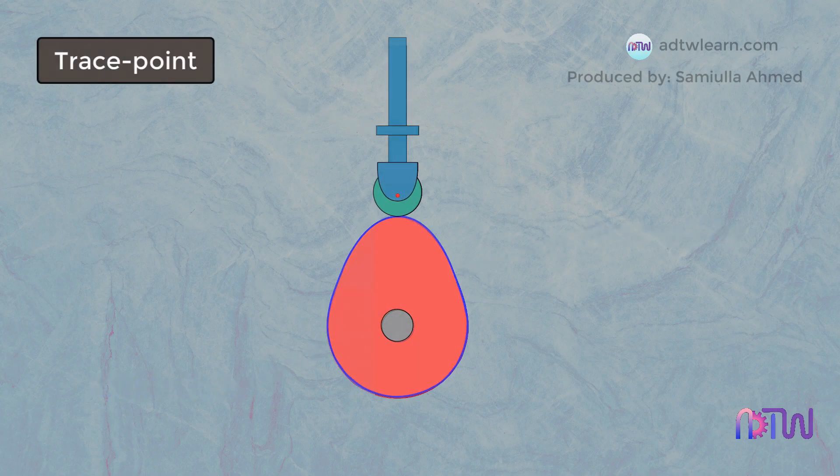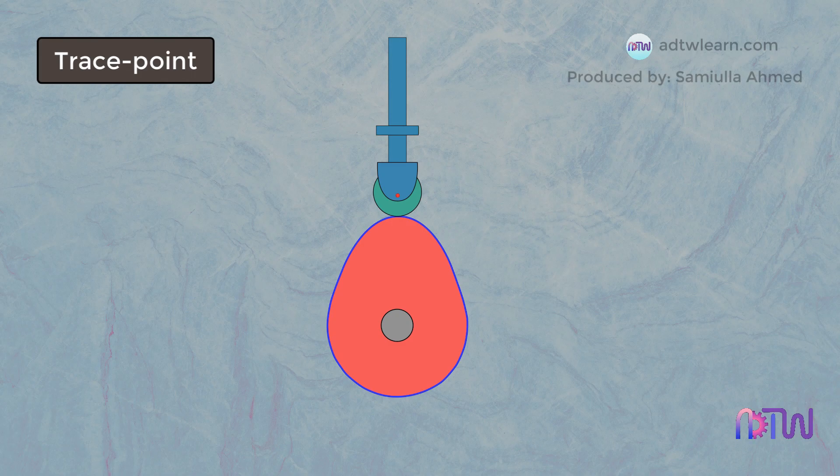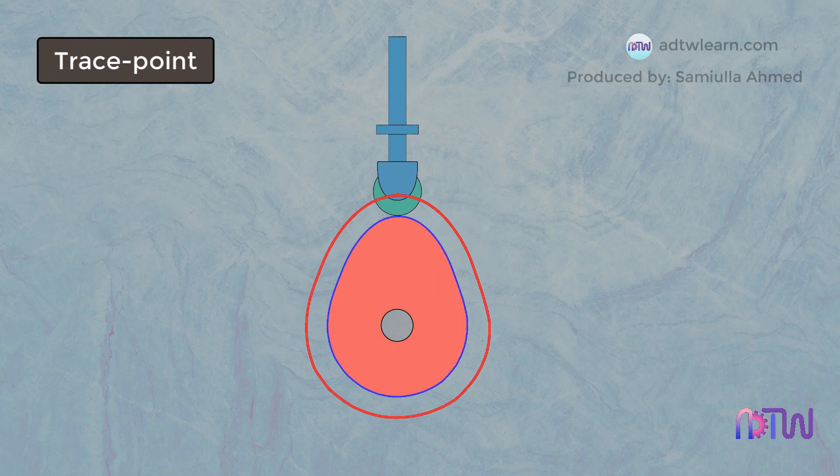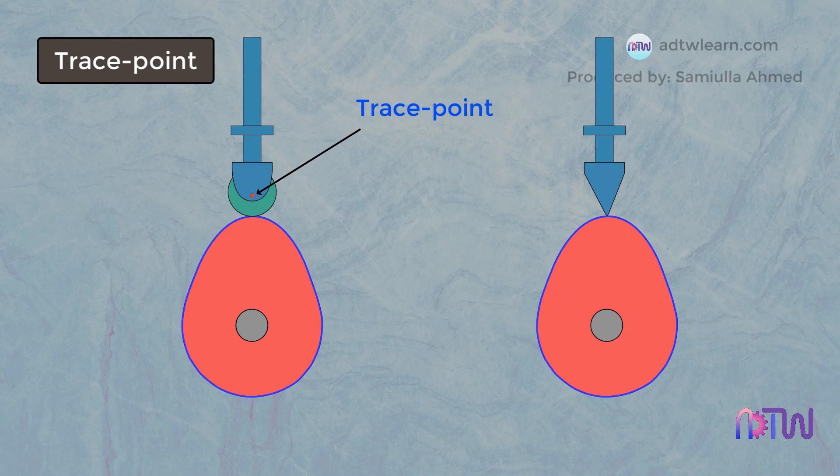Trace Point. A trace point is a theoretical point on the follower. Its motion describes the movement of the follower. For roller followers, this point of the follower is called the trace point. For knife edge followers, this edge point is the trace point.